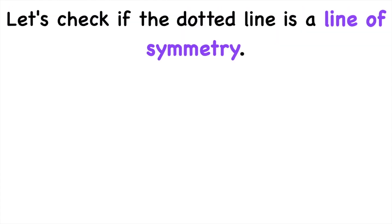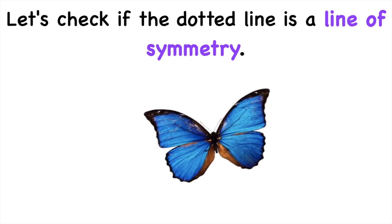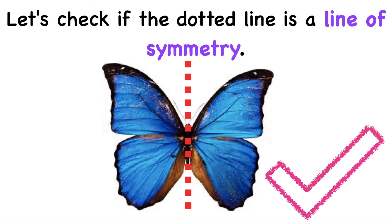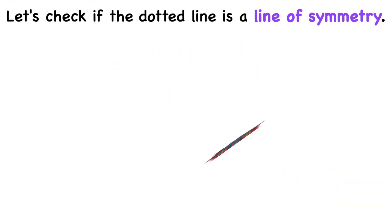Now, let's check if the dotted line is a line of symmetry. Let's have this butterfly. I will draw my dotted line here. Is the dotted line a line of symmetry? Very good, children. It is a line of symmetry because it divides the butterfly into two equal parts.